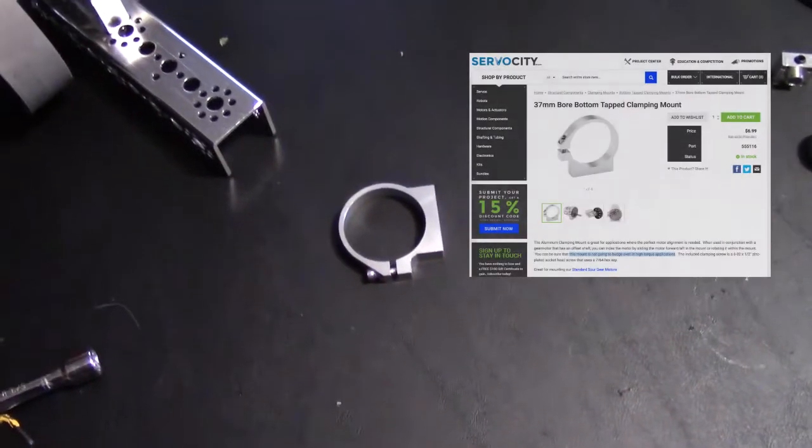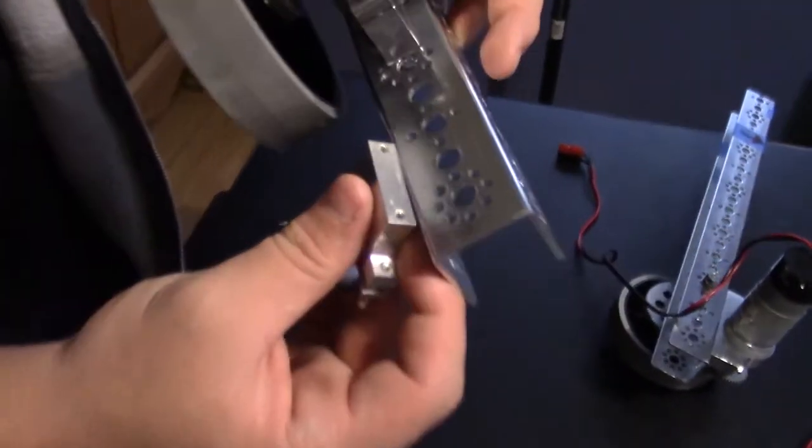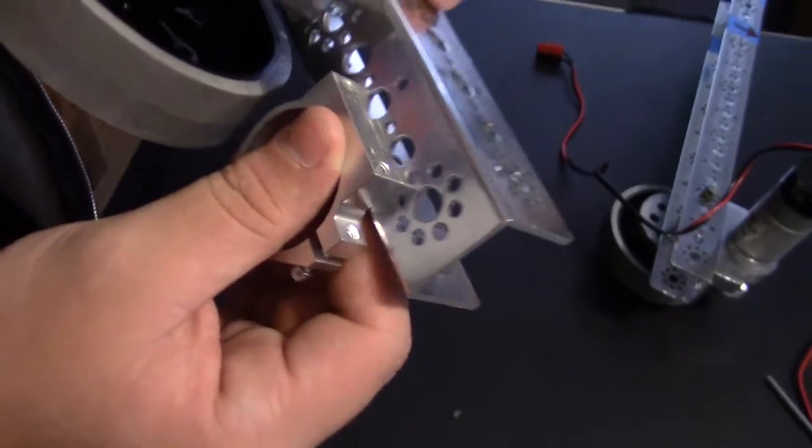We found this mount on Servo City, which clamps down tight enough to make the motor not spin. The hole pattern might not line up with your building system, so you may need to drill holes in either your motor mount or the C-channel.